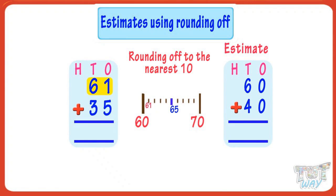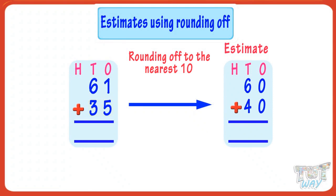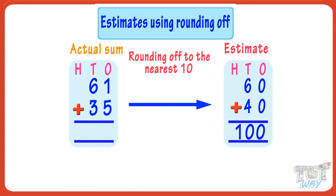Here, the ones place digit of 61 is 1, which is less than five, so we round it down to the previous ten — that is 60. The ones place digit of 35 is 5, so we round it up to the next ten, which is 40. Adding the rounded figures 60 and 40, we get 100. So our estimate for adding 61 and 35 is 100. If you actually add them, you get 96, so our estimate is very close to the actual sum.